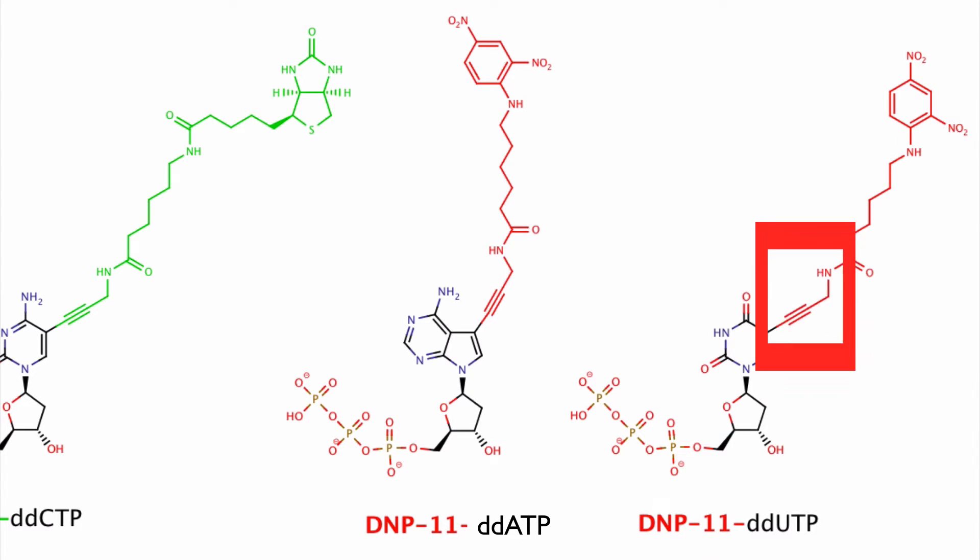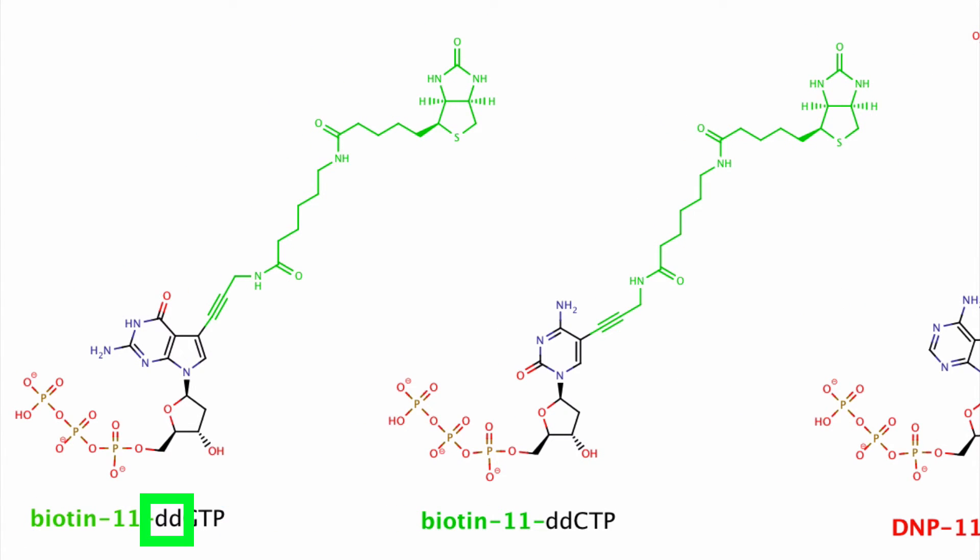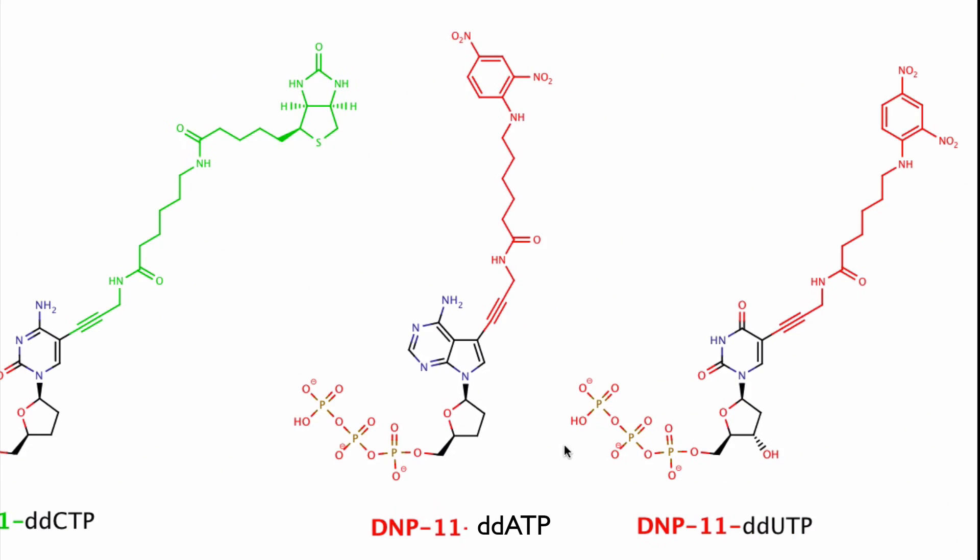And you'll notice that U, the close cousin of thymidine T, is what you actually see here. As I said, these are dideoxy, so let's get rid of that 3' hydroxy group. That's going to prevent polymerization going beyond a single base. That's why it's called SBE.